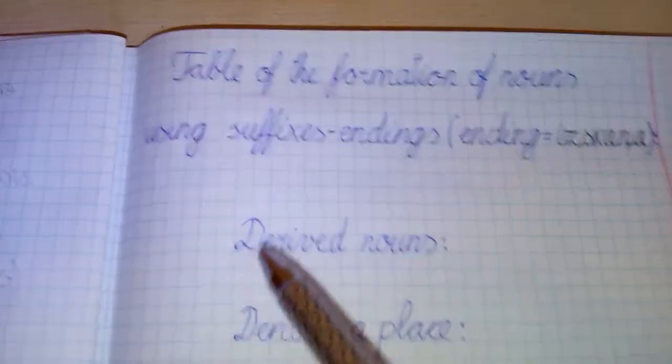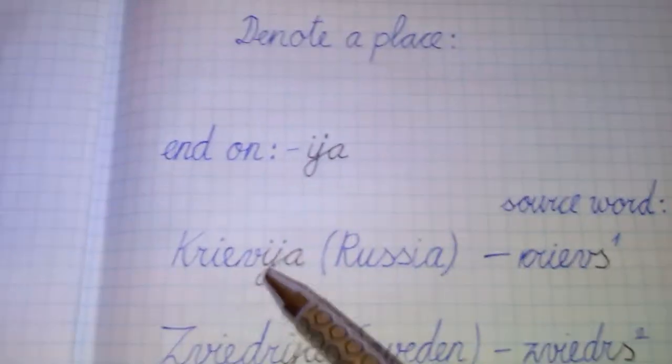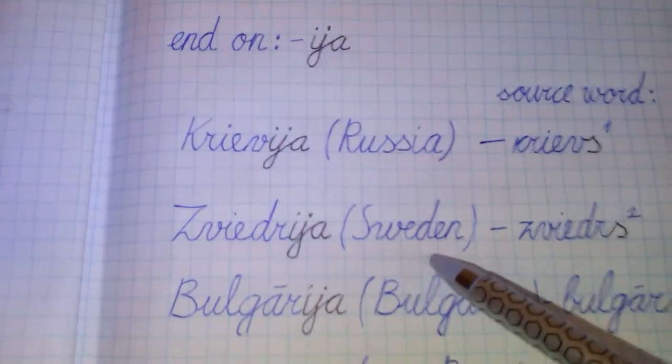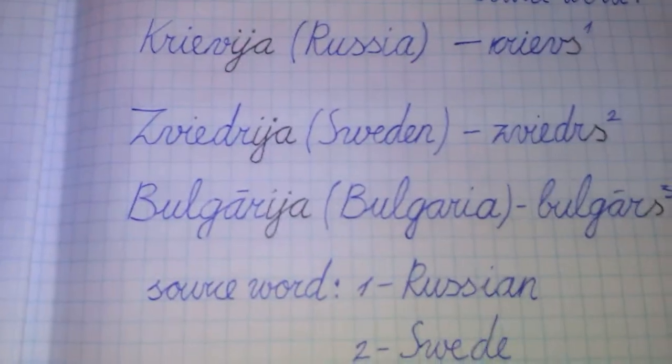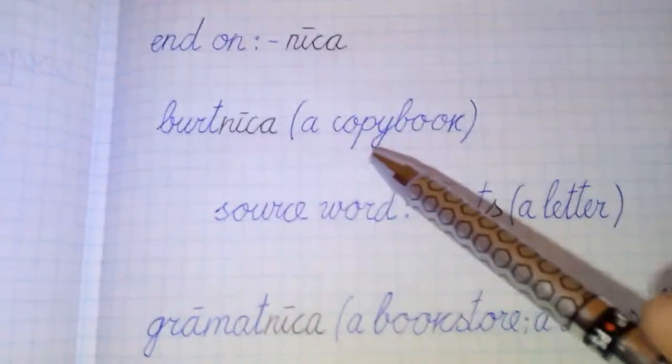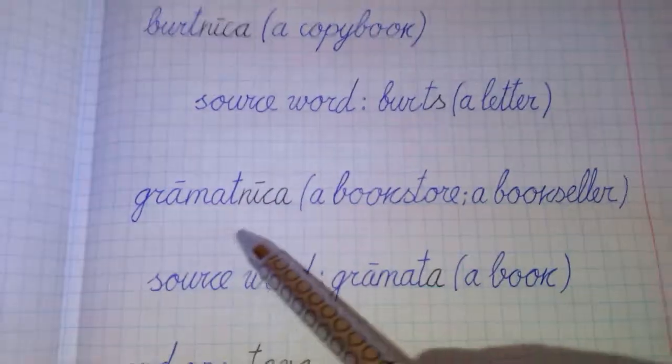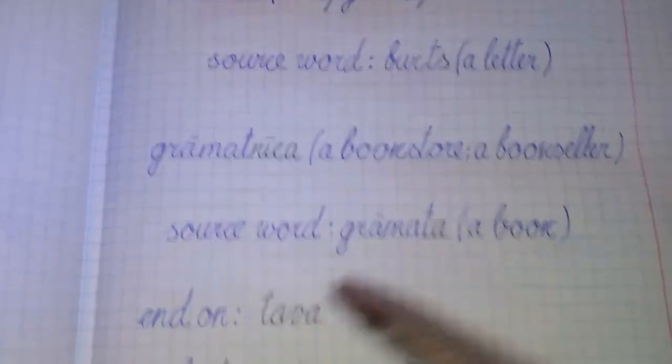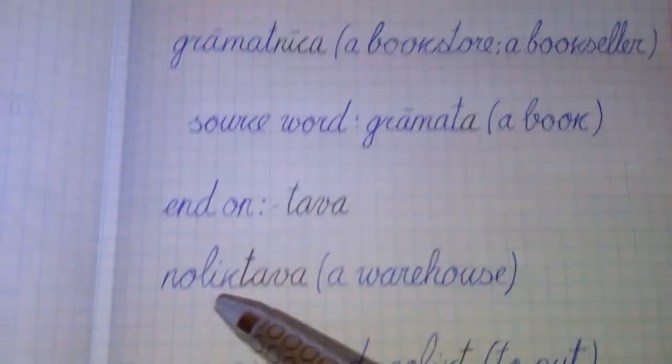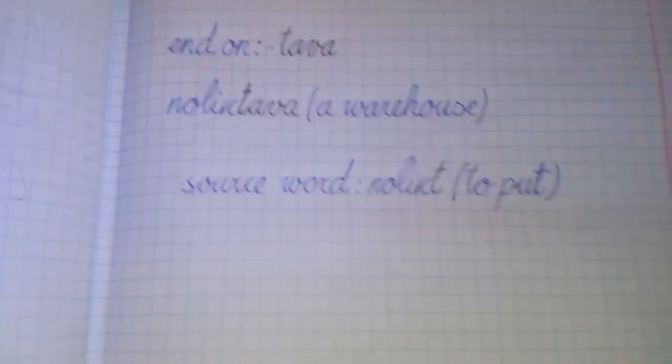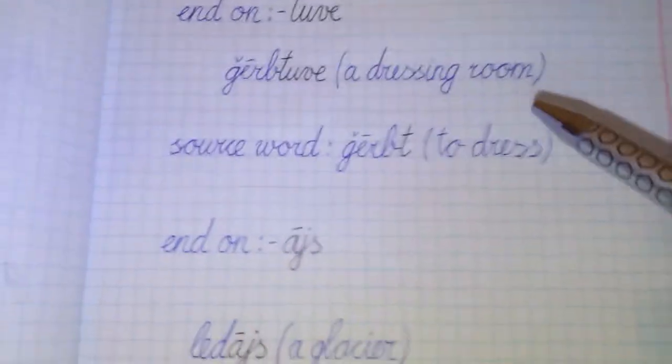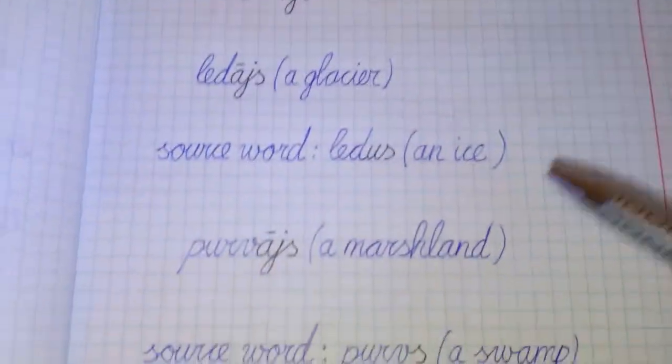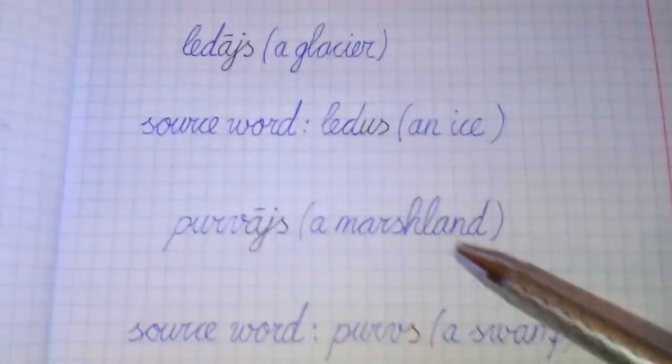Let's repeat: Krievija (Russia), Zviedrija (Sweden), Bulgārija (Bulgaria), Burtnīca (copybook), grāmatnīca (bookstore), noliktava (warehouse), ģērbtuve (dressing room), ledājs (glacier), purvājs (marshland).